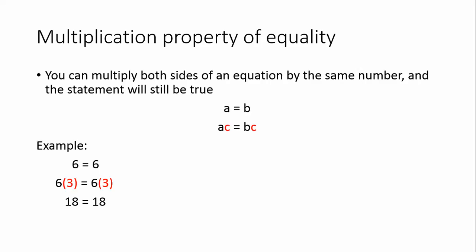For example, if A equals B, we can multiply both sides times C and still have a true statement. In our example, we have 6 equals 6. When we multiply both sides by 3, we end up with 18 equal to 18.